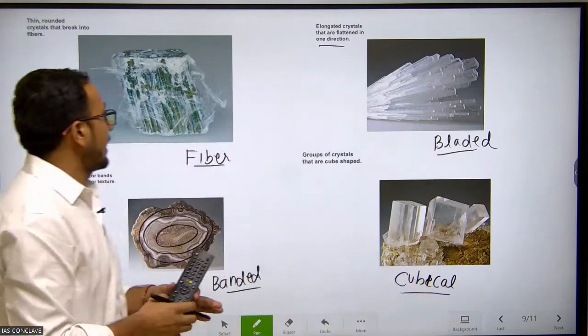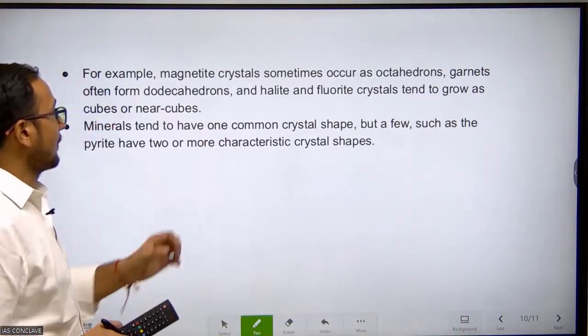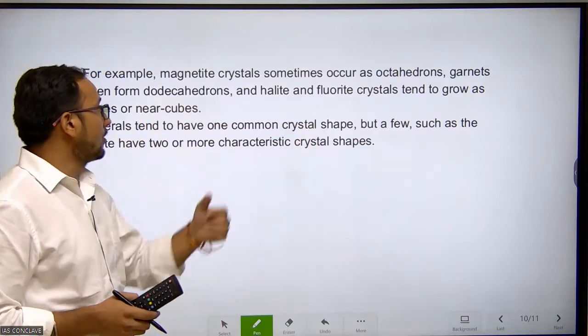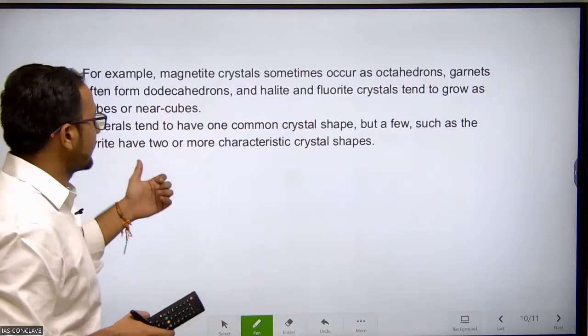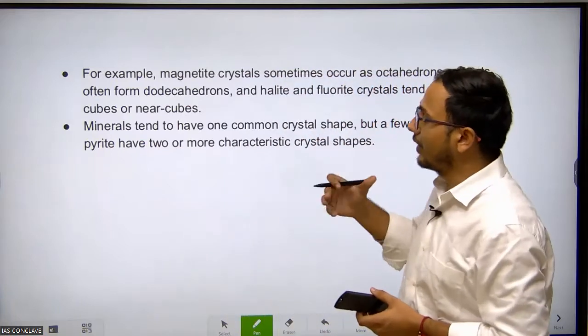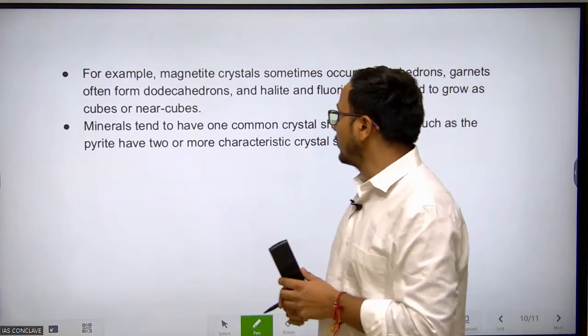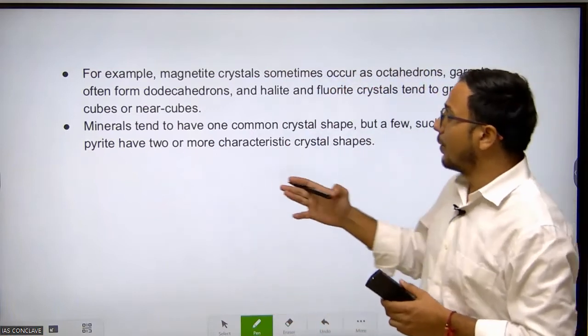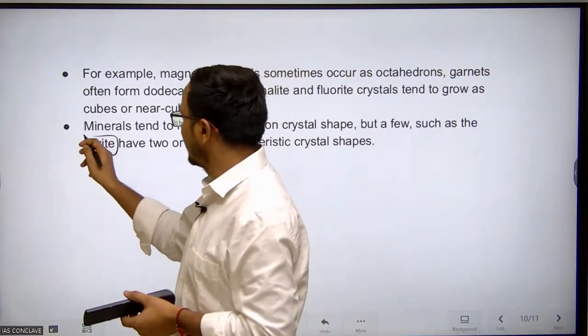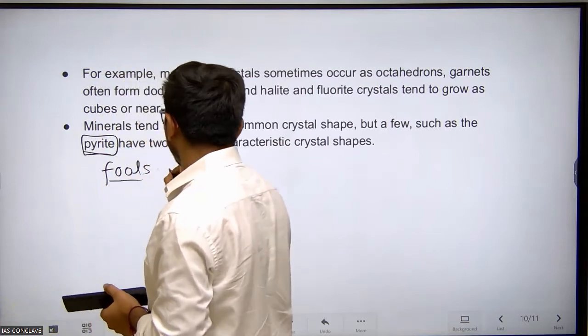Some minerals like magnetite crystals sometimes occur as octahedrons. Garnet minerals often form dodecahedrons, and halite and fluorite crystals tend to grow as cubical shapes. From this we can infer that various crystals have various different shapes depending upon their crystalline arrangement within the mineral structure. Minerals tend to have one common crystal shape, but a few such as pyrite have two or more characteristic crystal shapes. Pyrite is also called fool's gold.